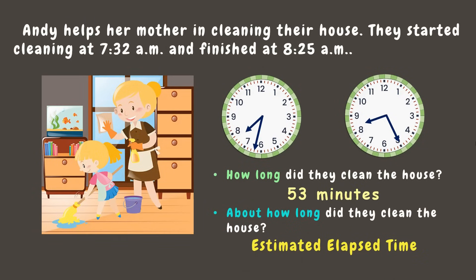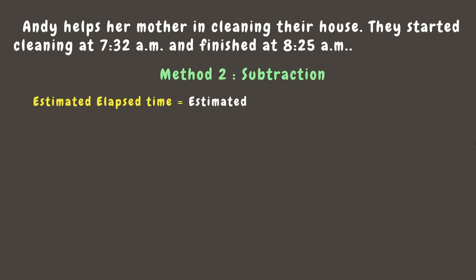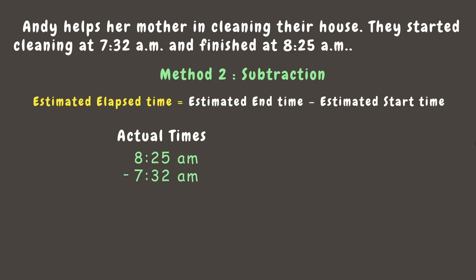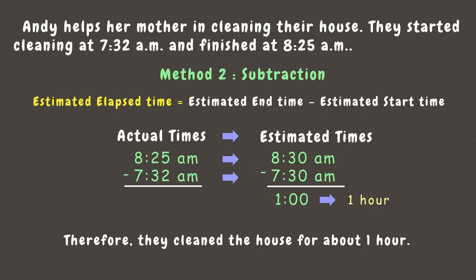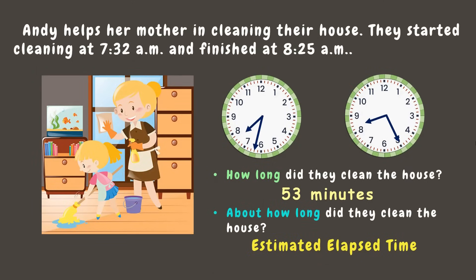Next, let's find the estimated elapsed time using subtraction. We round off the minutes of each time: 8:25 rounds to 8:30 AM, and 7:32 rounds to 7:30 AM. Subtracting: 30 minus 30 is 0, and 8 minus 7 is 1. Therefore our estimated answer is 1 hour — they cleaned the house for about 1 hour.